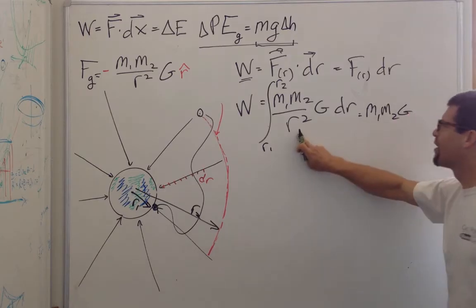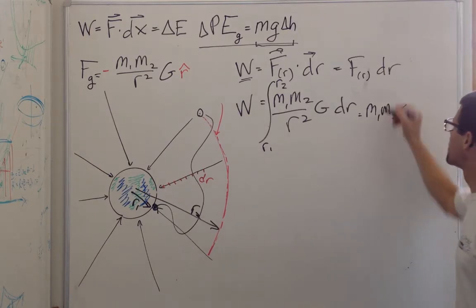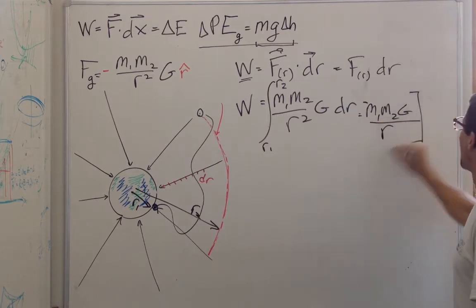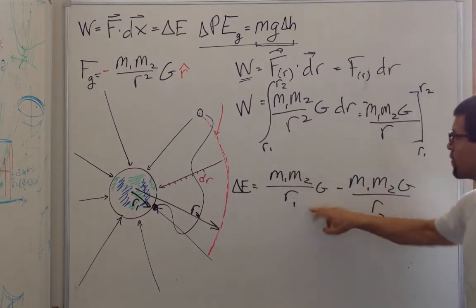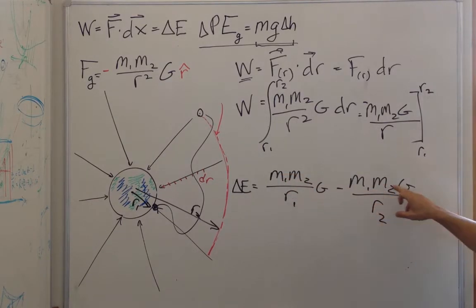And what we have to do is take all that little bit of work and integrate it up from R1 to R2. And we have a simple integral. We know how to do this because these are all constants, so they come out. And this is just R to the negative 2. It integrates to negative R to the negative 1. And then we have to evaluate at the limits, R1 and R2. So the change in energy is just equal to this product divided by R1 minus the product divided by R2. The reason they've been changed is because there's this negative here.